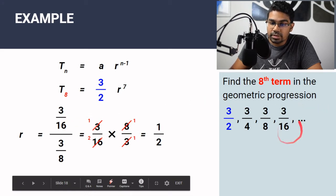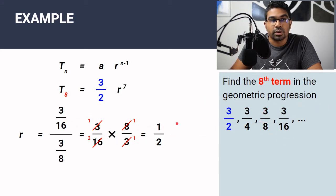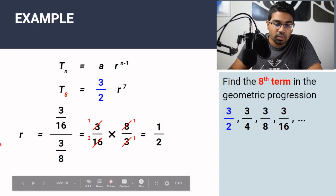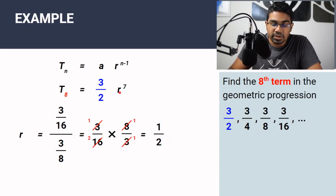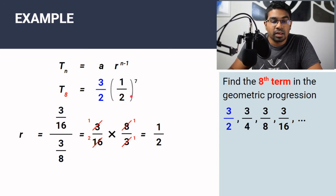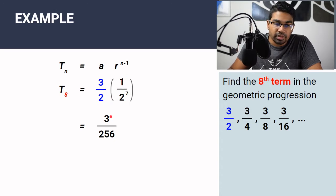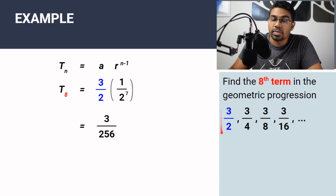For example, (3/8) ÷ (3/4) also gives 1/2, and (3/16) ÷ (3/8) also gives 1/2. Because this is a geometric progression, the common ratio will always be the same. So with R = 1/2, we substitute into the equation: (1/2) to the power of 7. Since 1 to the power of 7 is 1, we get T8 = 3/256.